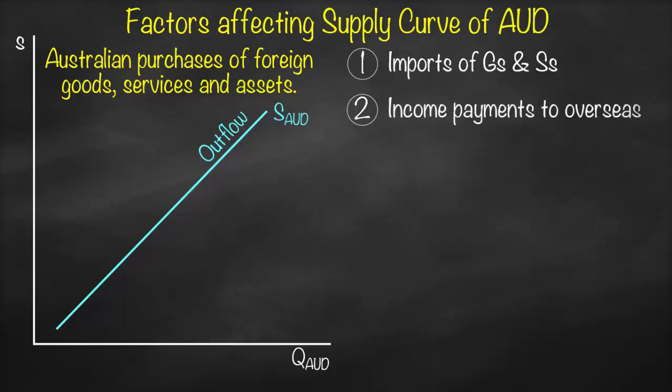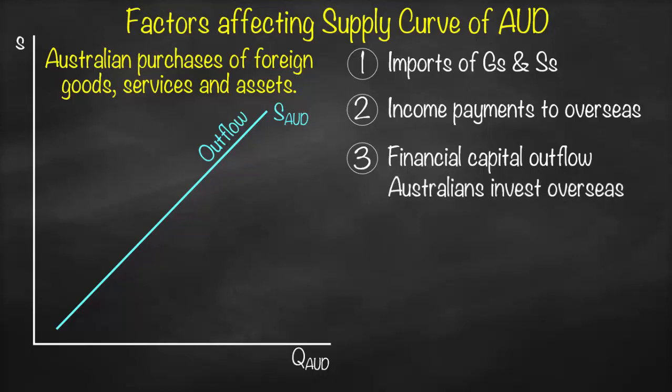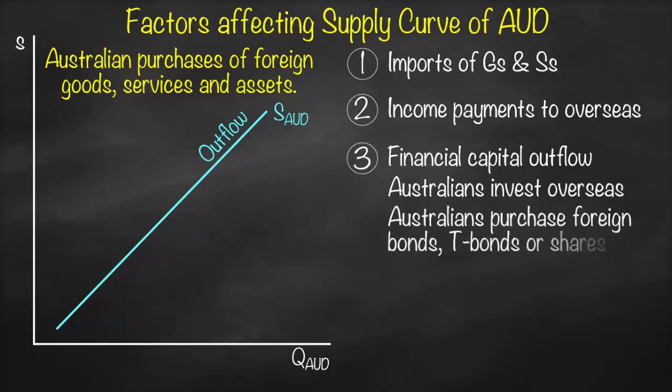Another example is income payments overseas — for instance, paying a German consultant a consultation fee. This is income going from Australia to Germany, which is outflow, affecting the supply curve. Financial capital outflow means Australians want to invest overseas, either through foreign direct investment — buying projects or starting a company abroad — or by purchasing foreign corporate bonds, treasury bonds, shares, or stocks.